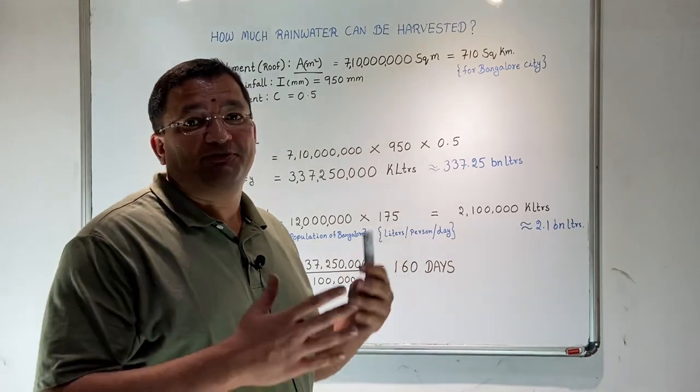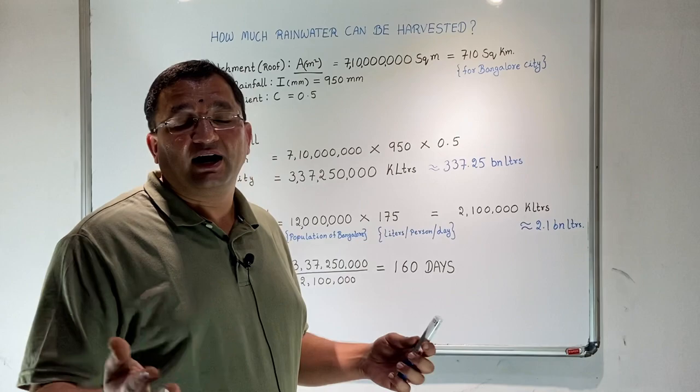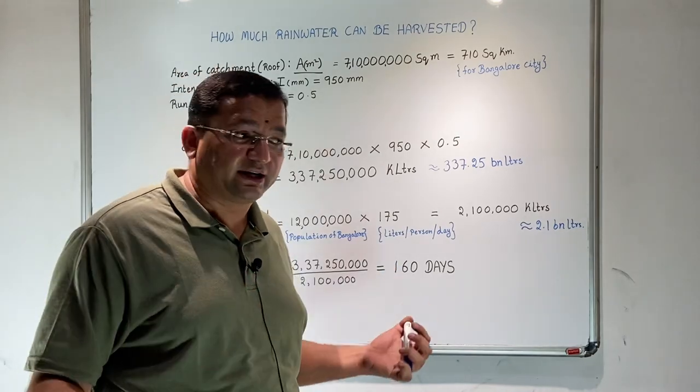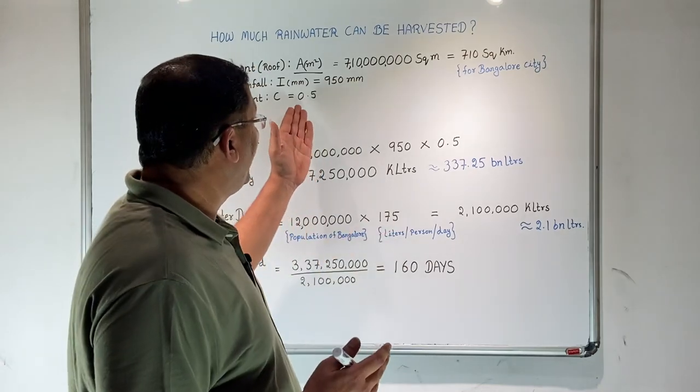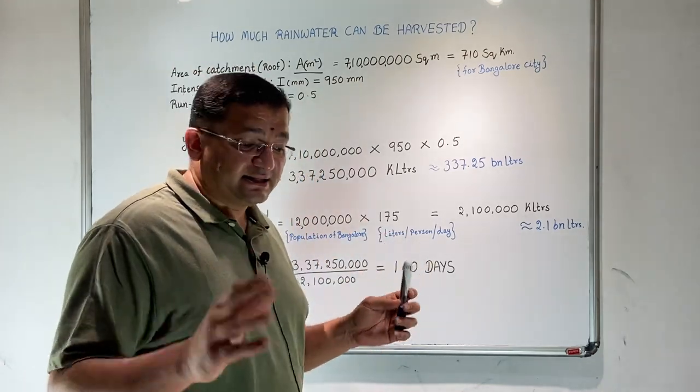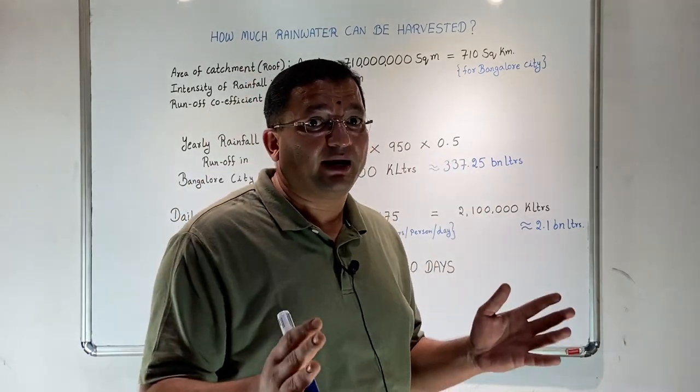The city catchment can vary from rooftops, RCC, zinc sheets, soil, gardens, asphalted roads, concrete roads. Safely we can say the runoff coefficient is 0.5. This means out of 100 liters of water which falls as rain on Bangalore, only 50 liters can be harvested.